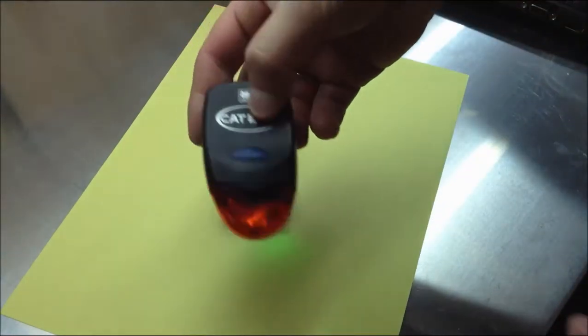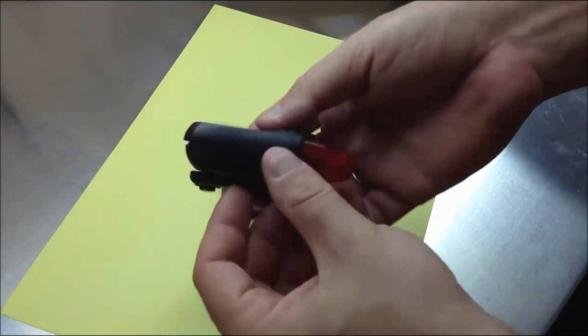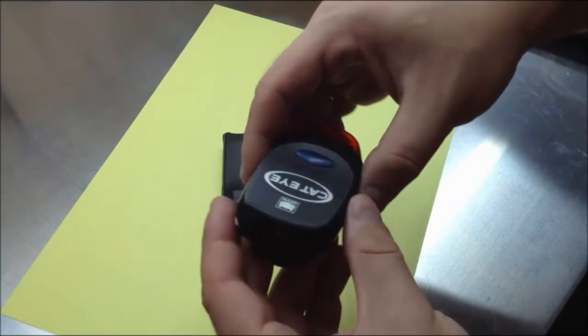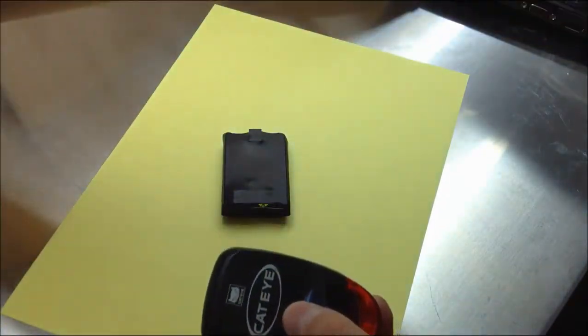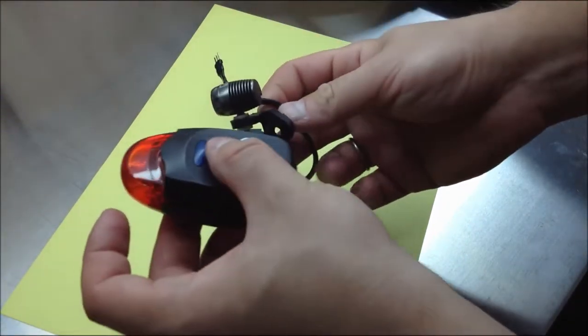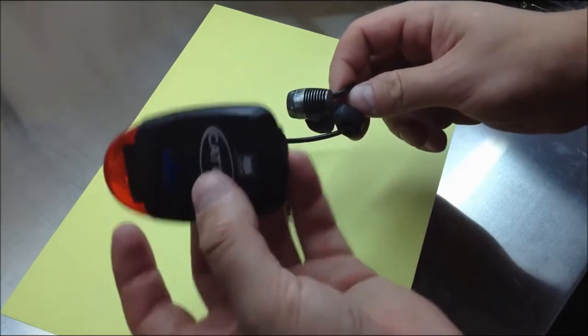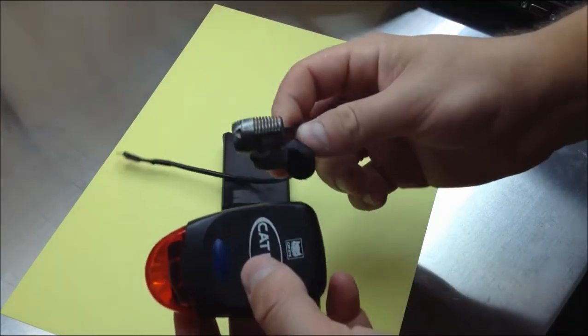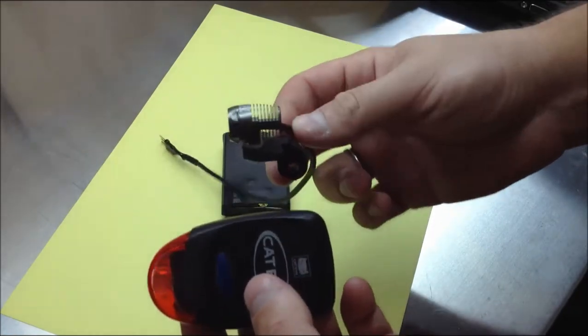So here you will see a very popular cheap tail light from CatEye. So you can compare the sizes. By the way this light is known as a very small but you can see that this one is just tiny.